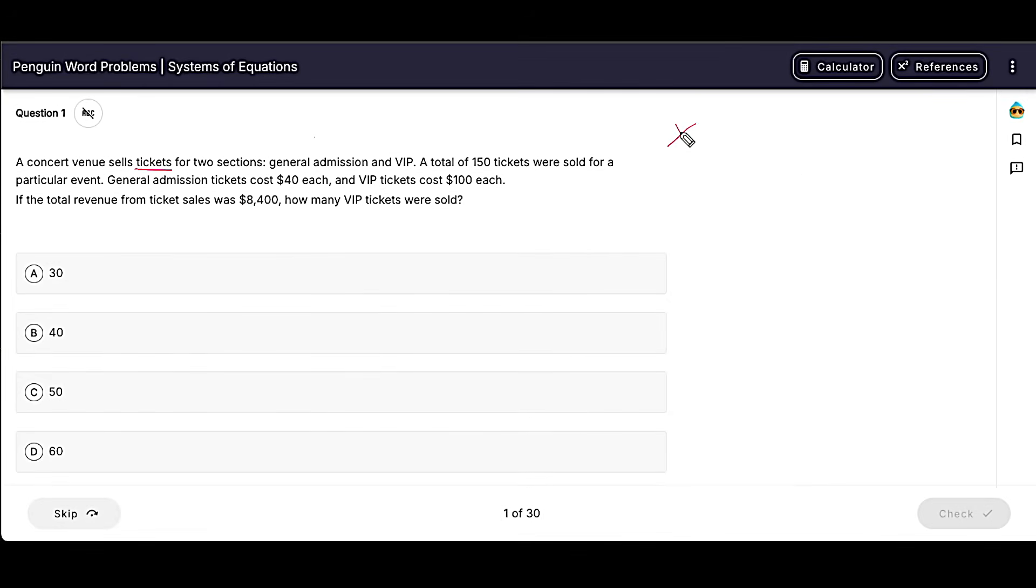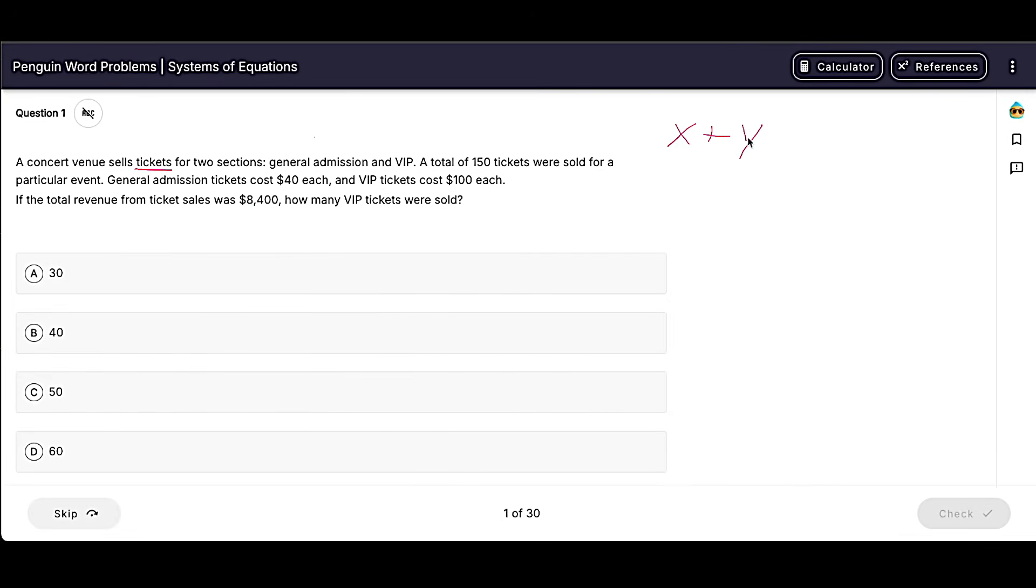So X plus Y is going to be total general admission tickets plus total VIP tickets, and it tells us that 150 tickets were sold. So that would equal 150.